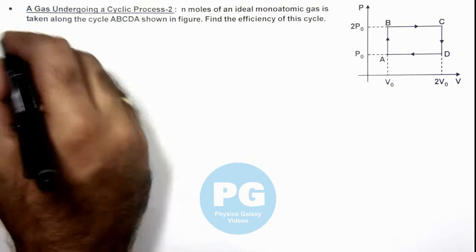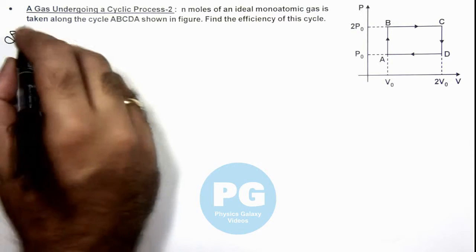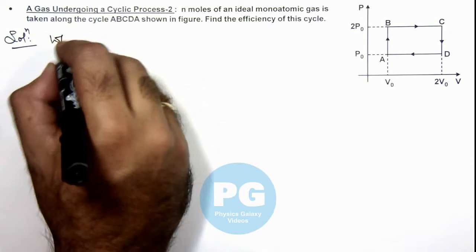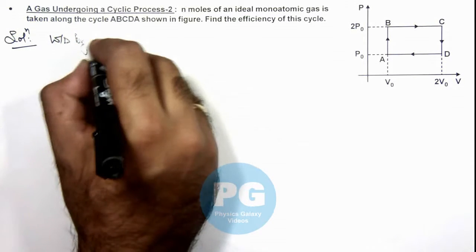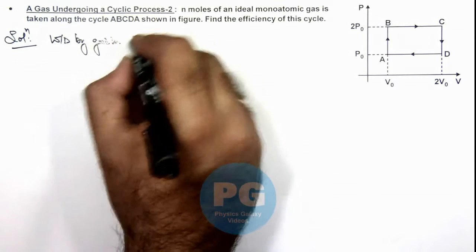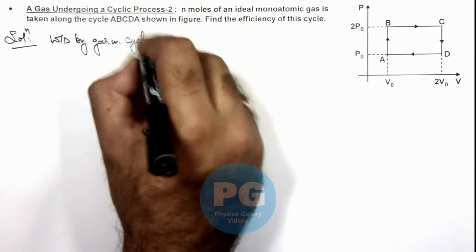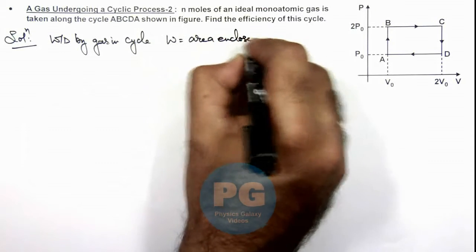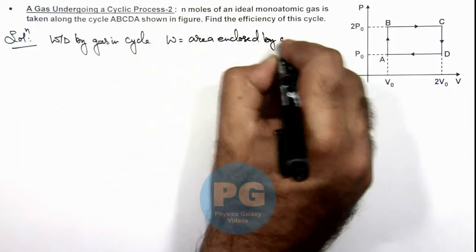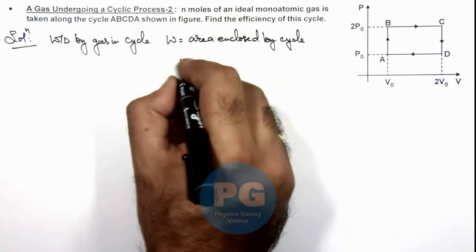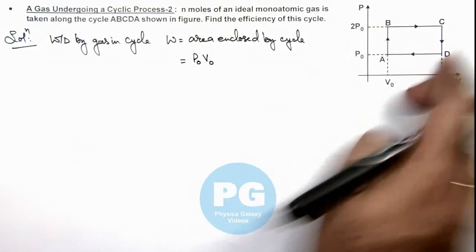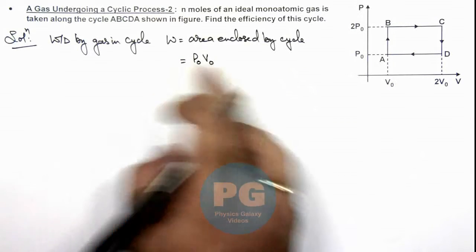Now in this situation here we can start by calculating the work done in the process. So here we can directly calculate the work done by gas in cycle, which can be given as area enclosed by cycle. So this work can be given as P₀V₀, as this is a rectangle and the area of rectangle is given by this.